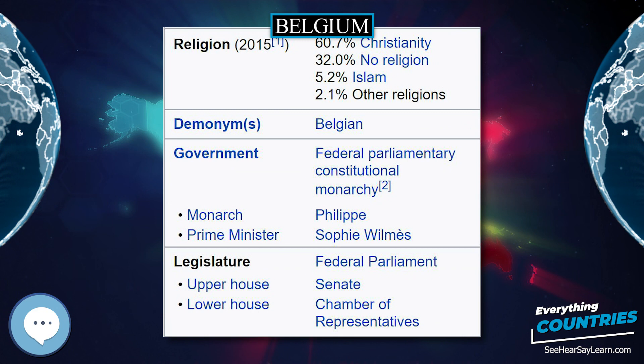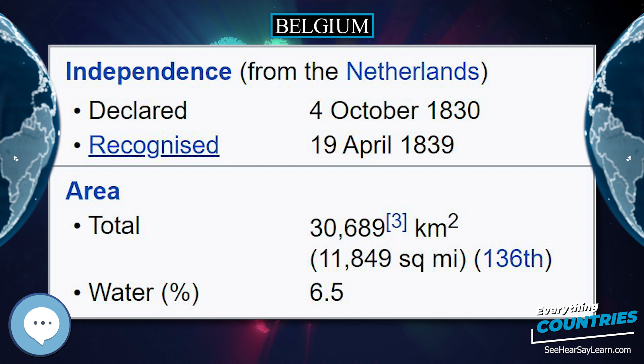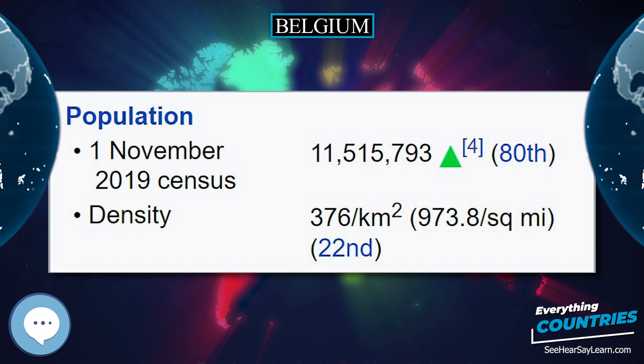The capital and largest city is Brussels; other major cities are Antwerp, Ghent, Charleroi, and Liège. Belgium is a federal constitutional monarchy with a parliamentary system.